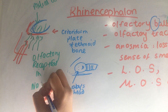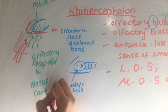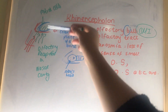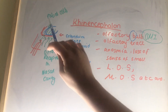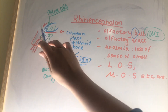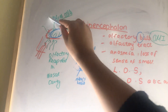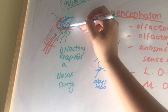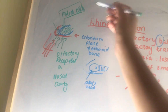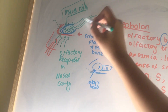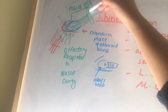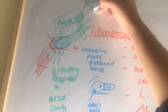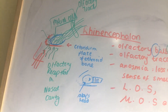We also have olfactory receptors within the nasal cavity. The connection between the olfactory receptor cells and the mitral cells — where the mitral cells are your second order neurons and the olfactory receptors are your first order neurons — forms the olfactory bulb. The olfactory tract is then a collection of neurons projecting from it.